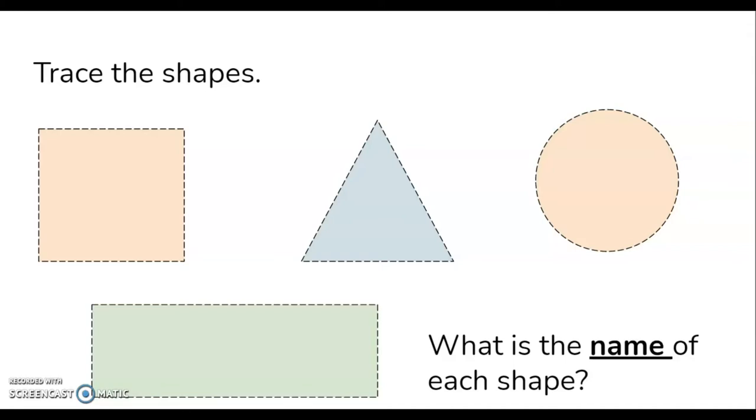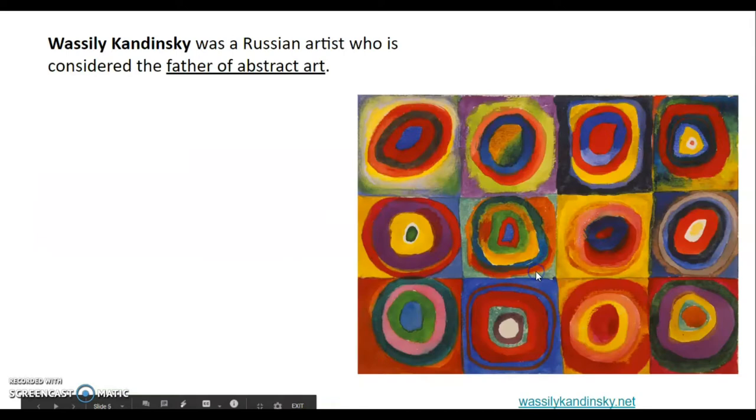Take your finger and trace these shapes. What is the name of each of these shapes? The first shape we have is a square. In the middle with three sides we have a triangle. This round shape is a circle. And on the very bottom we have a long four-sided shape, a rectangle.